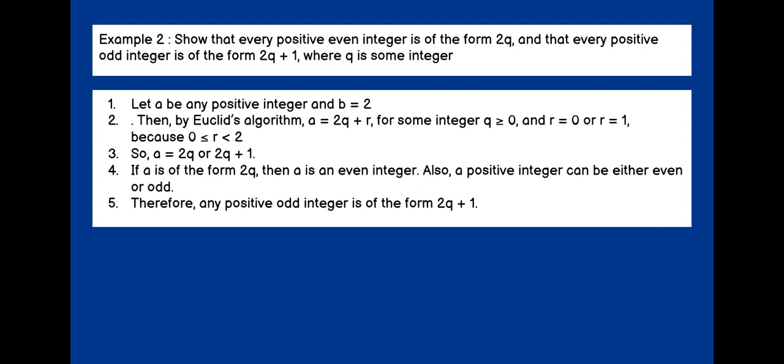Example 2, show that every positive even integer is in the form of 2Q, and that every positive odd integer is in the form of 2Q plus 1, where Q is some integer.